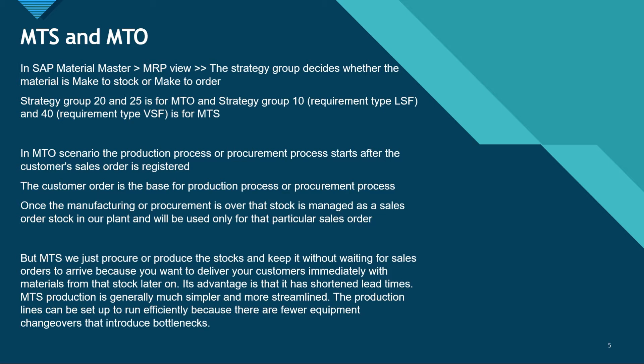In the material master in the MRP view, the strategy group will decide whether the material is Made to Stock or Made to Order. There are certain values of strategy group: 20 and 25 are for MTO, while 10 and 40 are for MTS. If we take strategy group 10, the requirement type will be RSF, and if we take 40, the requirement type will be VSF.